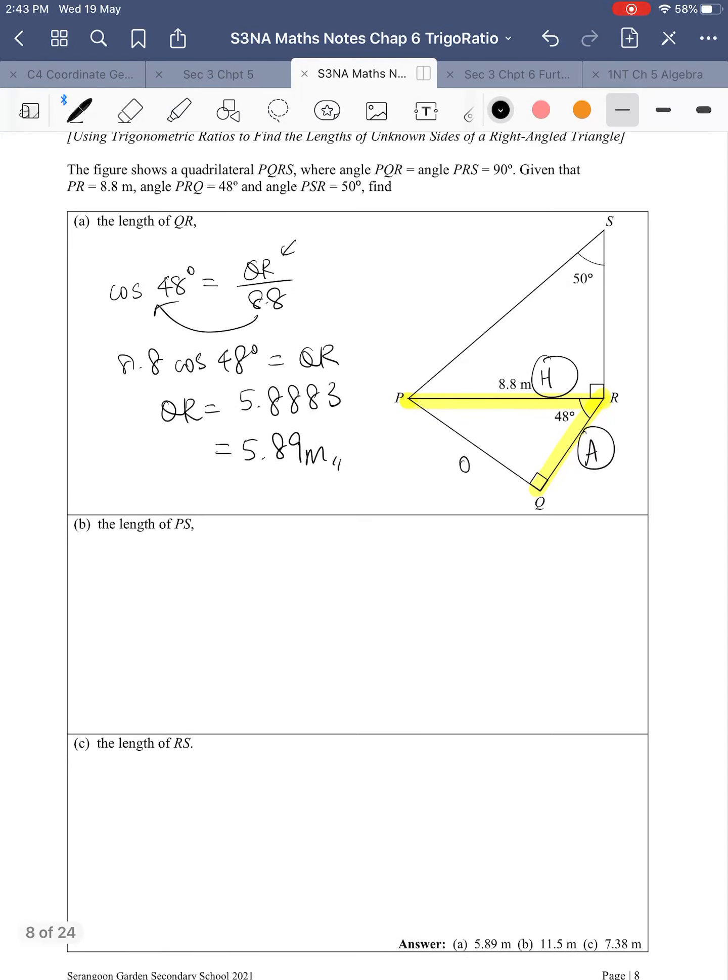Next we have length of PS. Length of PS is what I want to find. Let me label it first: hypotenuse, opposite, adjacent. What I have is PR, so O and H, TOA, CAH, SOH, I would use sine. Sine 50 equals O over H, which is 8.8 over PS. Now the unknown is at the bottom. Remember to do your swap, swap the position.